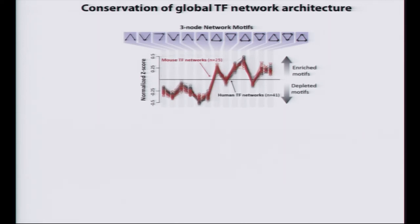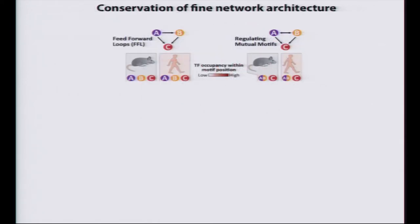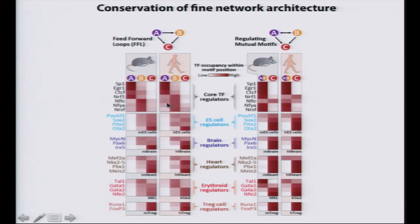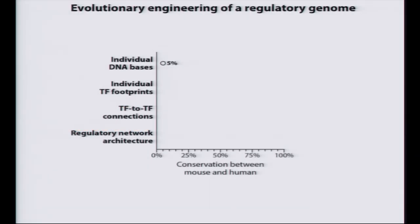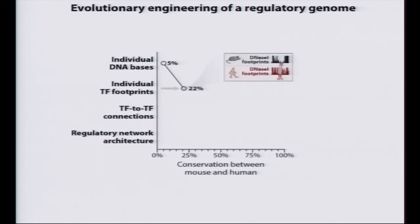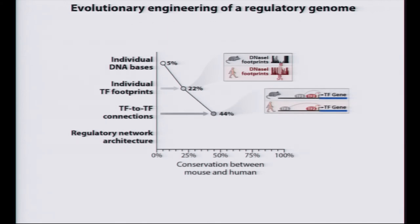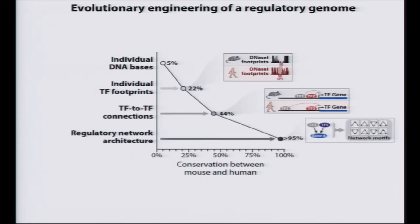This also extends to fine network architecture: the same regulators like to sit in the same spots in the same kinds of networks between human and mouse. Stepping back from the genome, we can see where evolution has really been acting: at the level of individual DNA bases, conservation is around 5–10%; at the level of footprints, about 20%; at the level of transcription factor connections, around 44%; and at the level of networks, human and mouse networks really look the same in many different ways.